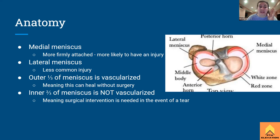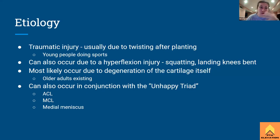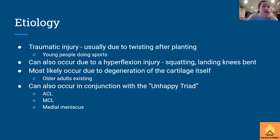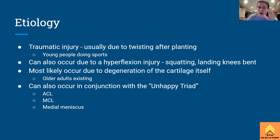Etiology: how does one tear their meniscus? Usually the same way people tear their ACL or MCL — a twisting injury after planting. This is common in young people doing sports with cutting movements like soccer, basketball, lacrosse, field hockey, football — that plant-and-twist mechanism. This can also occur due to hyperflexion injury, like a very deep aggressive squat, landing on bent knees while diving for a ball or landing awkwardly in gymnastics. These can all cause a meniscus tear because the meniscus is that shock-cushioning structure.